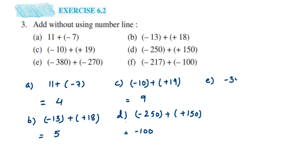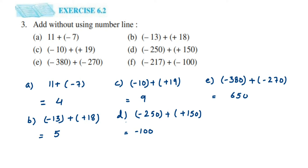The next one is minus 380 plus minus 270. This is a bit different from the previous questions — both integers are negative, they have the same sign: minus and minus. Whenever they have the same sign, we add them. So add 380 and 270, which gives 650. Same sign means we add and put the same sign, so since both integers are negative, the answer is minus 650.